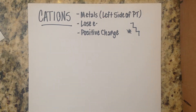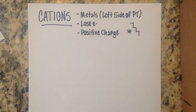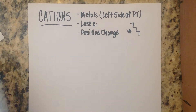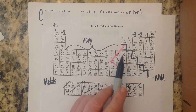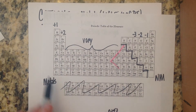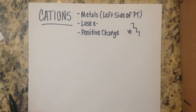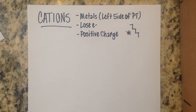Let's talk about cations. You've already seen the video on ions in general — an ion is a charged particle that has either lost or gained electrons, and therefore has become either positively or negatively charged. We're going to focus just on cations. Cations come from metals, which are on the left side of the stair-step line on the periodic table. Metals very easily lose electrons because they want to look like a noble gas.